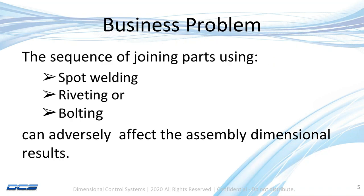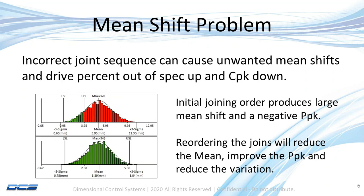When we talk about joining parts, we're talking about spot welding, riveting, or bolting. Because they are discrete events, the order with which you weld, rivet, or bolt can affect the assembly dimensional variation — as we'll show in a model we'll cover. If you have the incorrect sequence, you can have too much variation, which is what most people think of when doing variation studies, but it can also result in significant mean shifts.